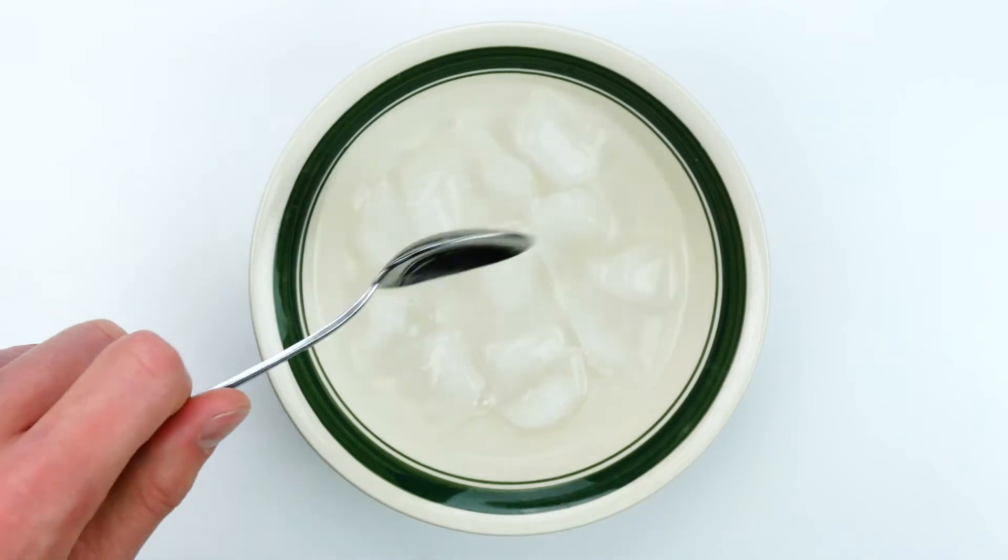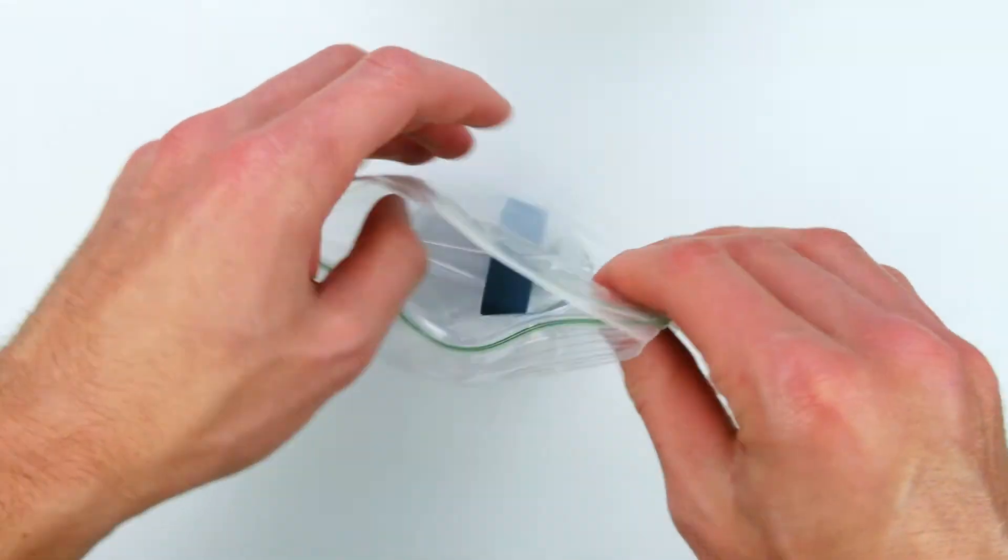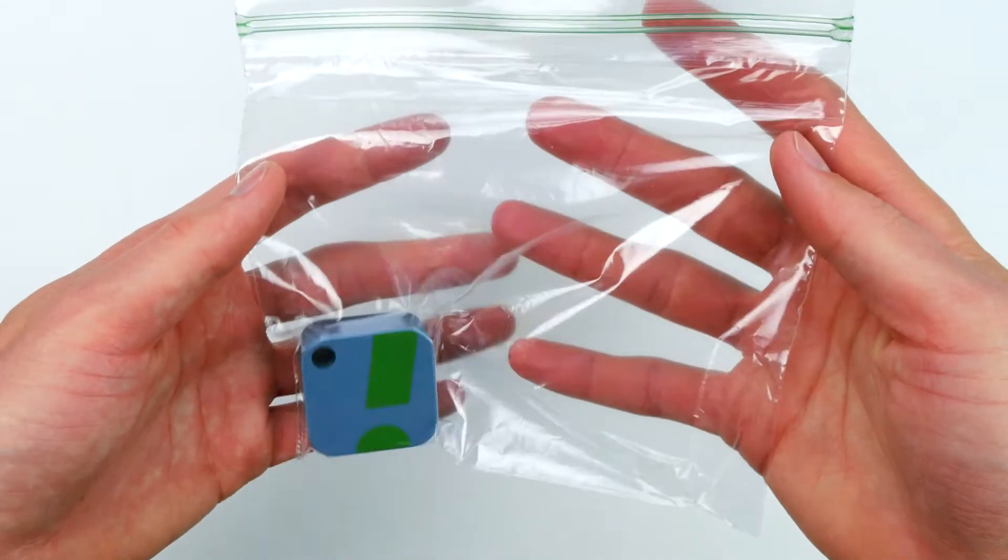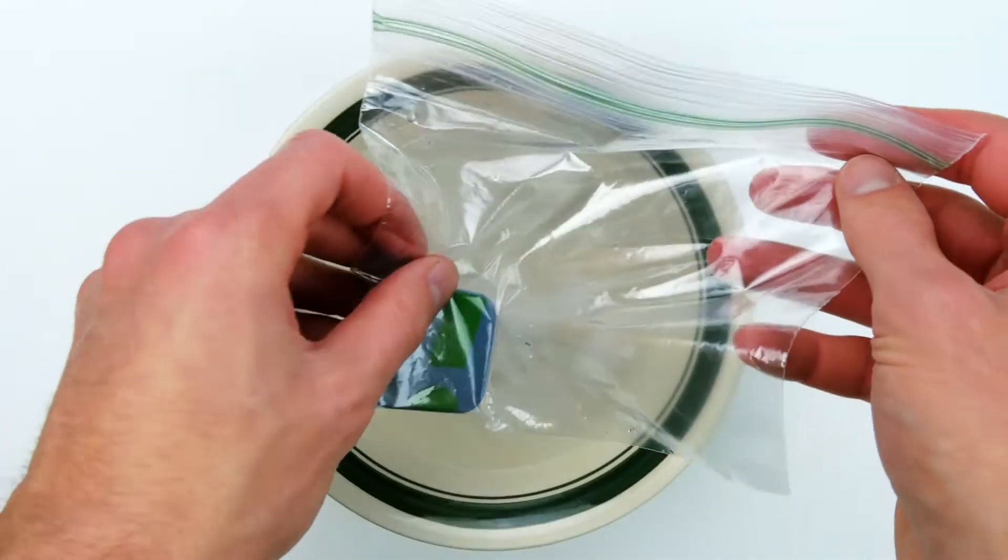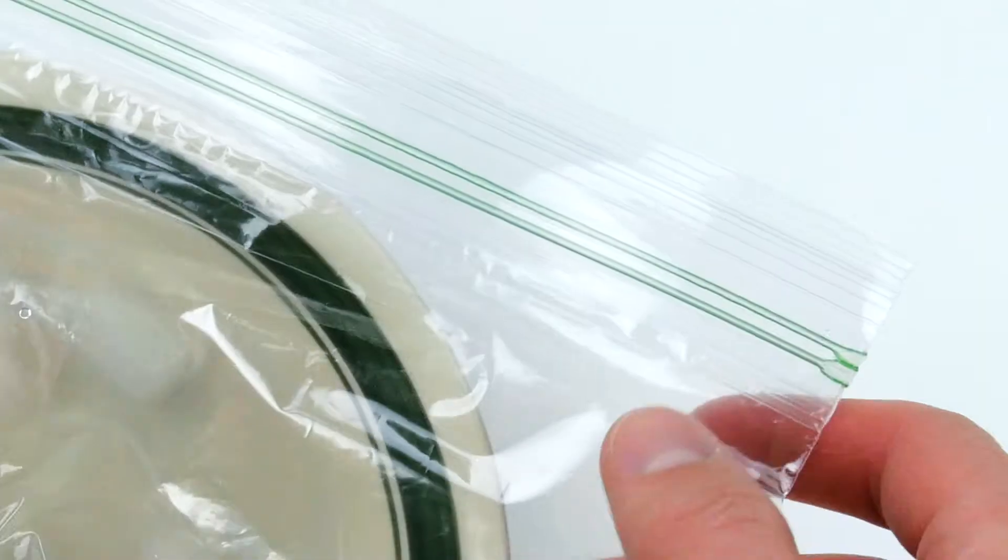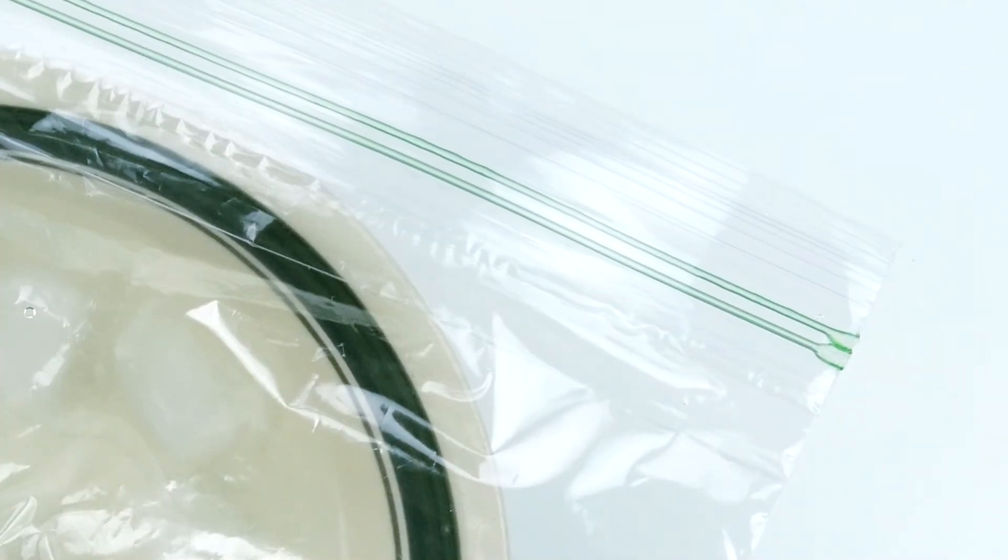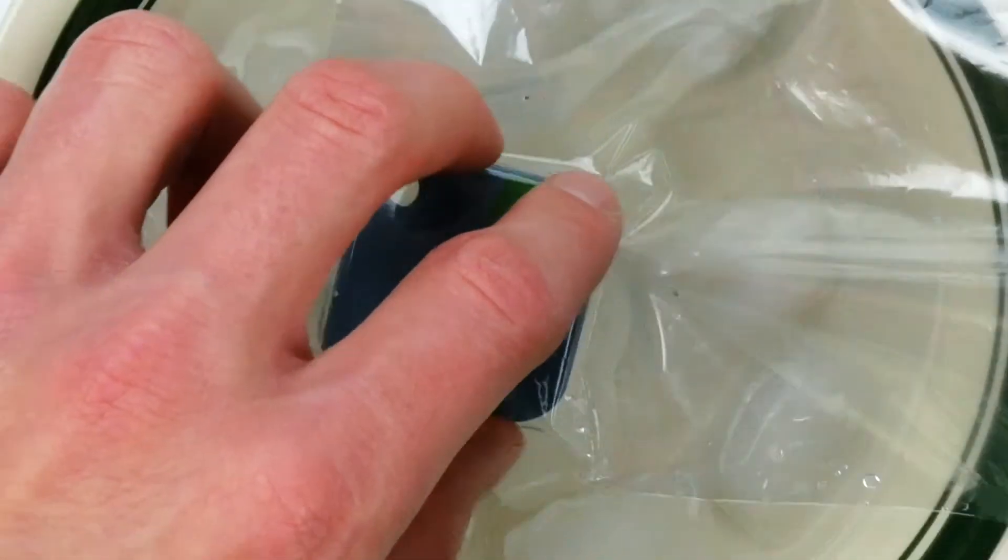Stir the ice and water mixture and let it sit while you seal your SensorPush in a zip-top baggie. Get as much air out of the bag as possible. Place the baggie with the SensorPush in the water. It's best to keep the zipper out of the water, just in case it doesn't seal properly.